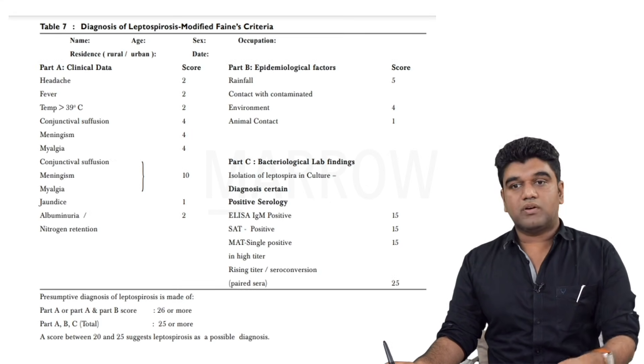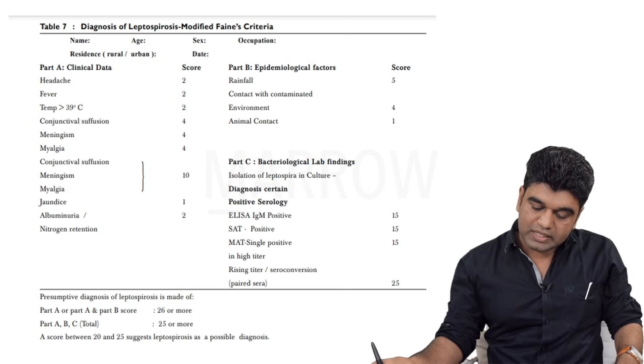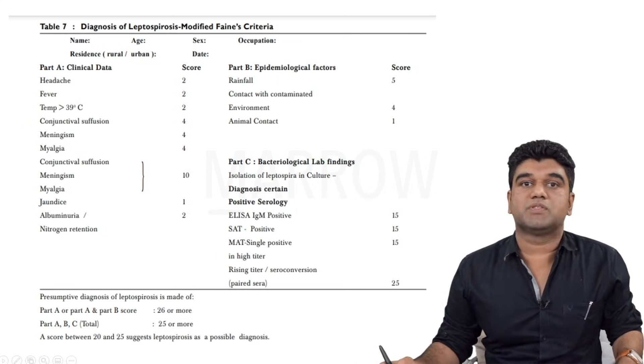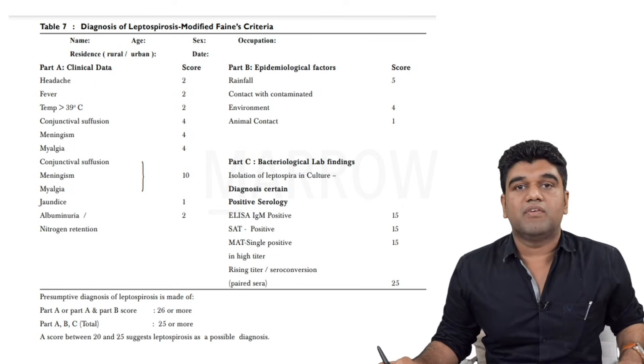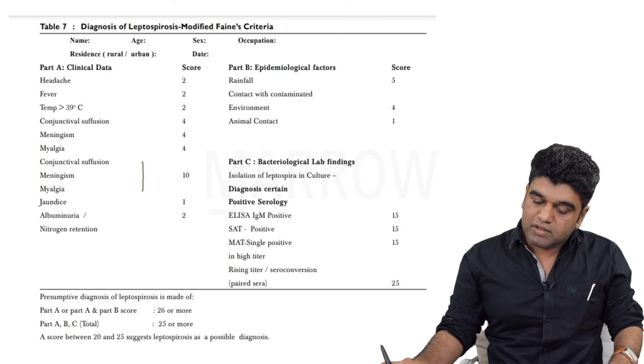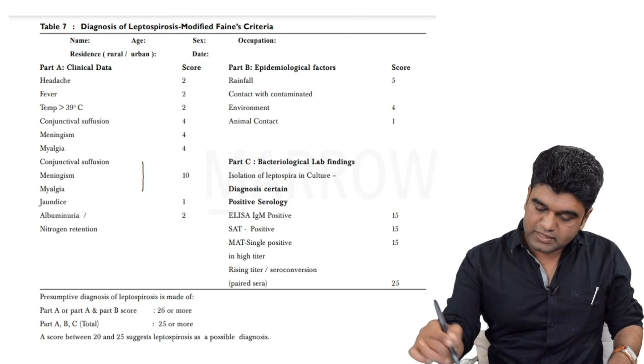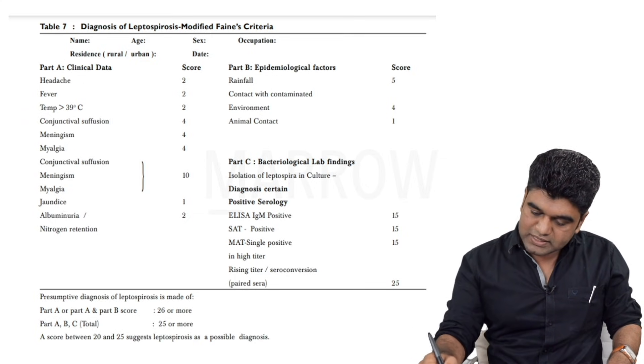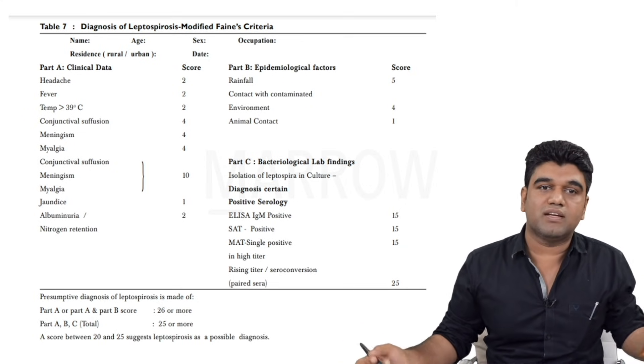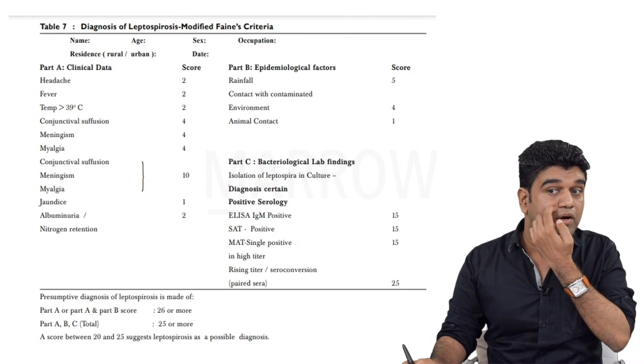Now how do you diagnose? Diagnosis has so many criteria. Faine was the first person who actually put in the criteria. This is the criteria we follow in India, by our own Dr. Shivakumar sir. He's a legendary person in leptospirosis. Please read on his contributions. Very fortunate to have met him, talked to him, been part of many things. Very useful criteria. You can see this - Part A, Part B epidemiological data, Part C bacterial lab findings. You don't have to know this, but it's just out of my emotional connect with the disease and with sir that I've posted this. But this is very useful when you do it in a hospital setting.